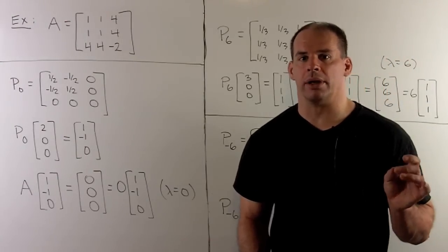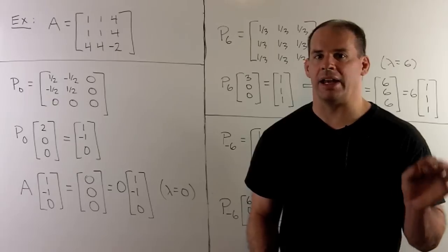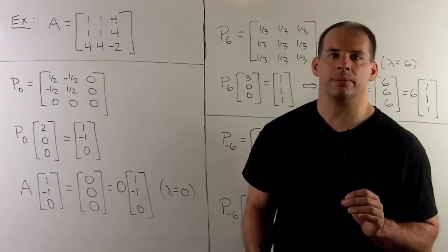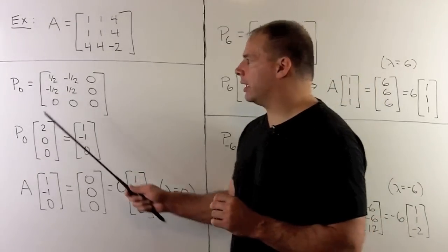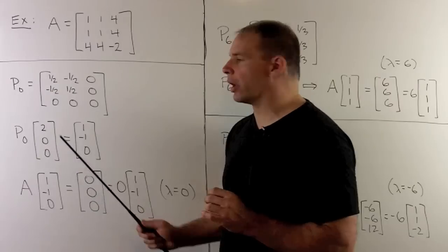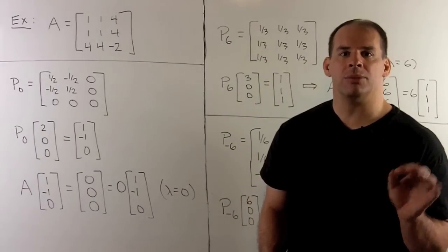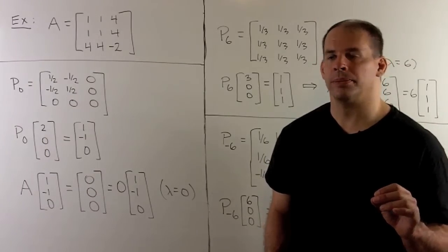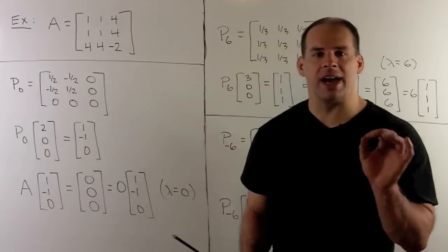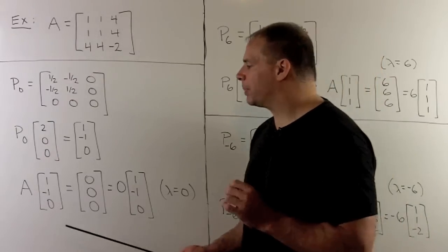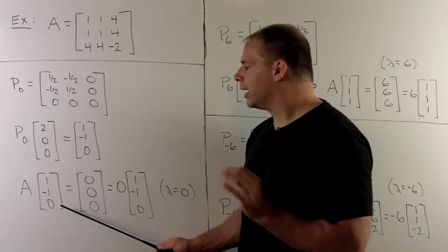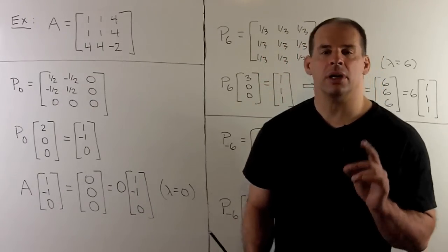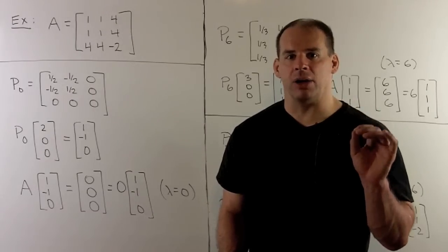Because our eigenspaces are one-dimensional, applying a projection operator to any vector that gives a non-zero output yields a basis for that eigenspace. Taking P_0 applied to the vector (2, 0, 0) — just a scaled standard basis vector chosen to get integer outputs — we get (1, -1, 0). Checking the eigenvector property: applying A to (1, -1, 0) gives (0, 0, 0), which is zero times our vector. That confirms eigenvalue equal to zero.